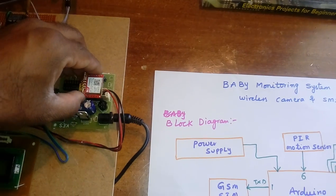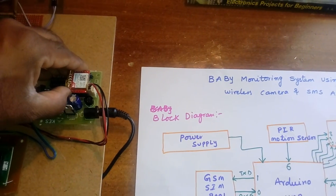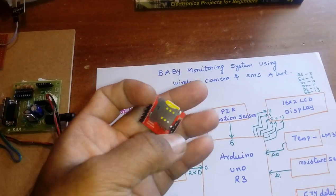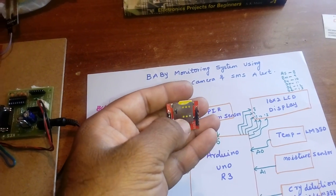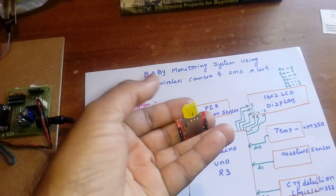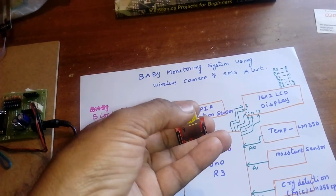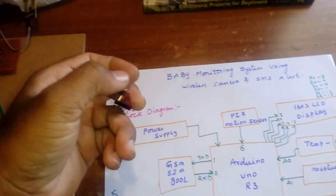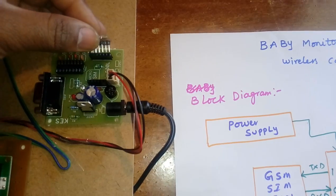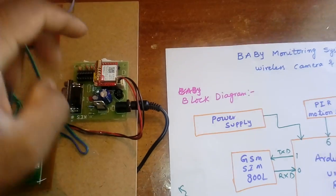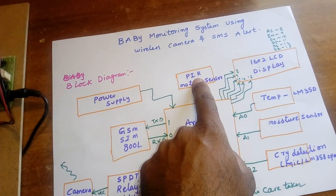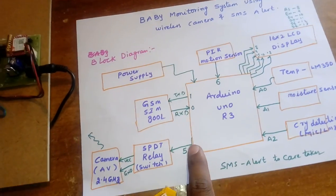The SIM800L requires a 2G or 3G SIM card — 4G is not supported. You insert the SIM card like this. When the PIR is detected, the relay coil will switch and the camera will turn on.